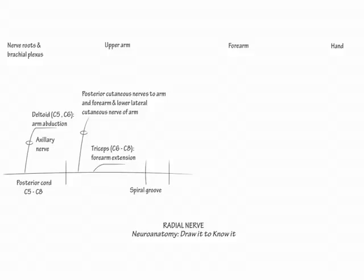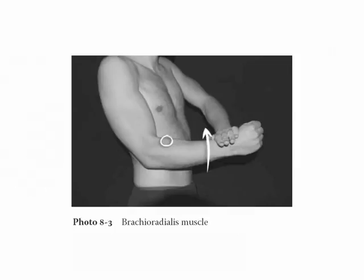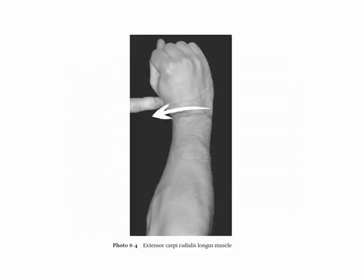Where the upper arm and forearm meet, label the lateral epicondyle group C5 to C8, which comprises brachioradialis (innervated by C5 and C6), brachialis, and extensor carpi radialis longus and brevis. These muscles attach at the distal upper arm and proximal forearm. To demonstrate brachioradialis, hold your arm at your side, thumb up in mid position, and flex it. To demonstrate extensor carpi radialis longus and brevis, extend and deviate your wrist radially against resistance.